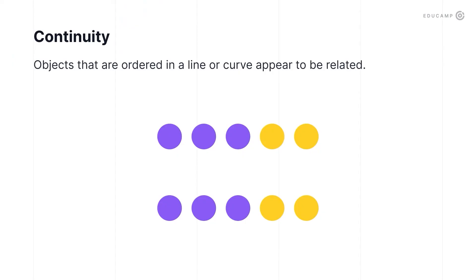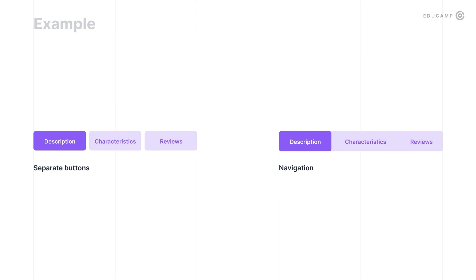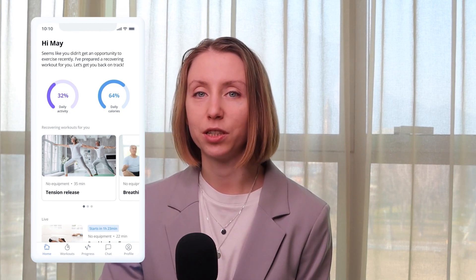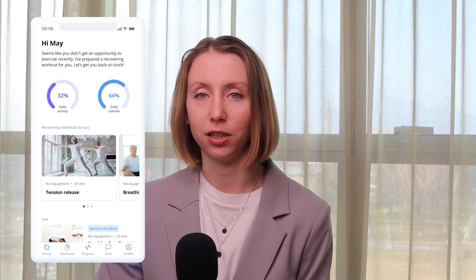The fourth Gestalt principle: the principle of continuity. Objects that are ordered in a line appear to be related. This principle is often used in navigation — there is a difference between a group of buttons and navigation that shares the same area. It is also often used in mobile interfaces when you have a series of objects that need to be scrolled. To communicate to the user that elements can be scrolled, the last element is partly hidden, helping users understand that there is more content to scroll.